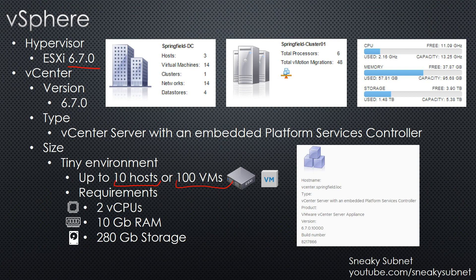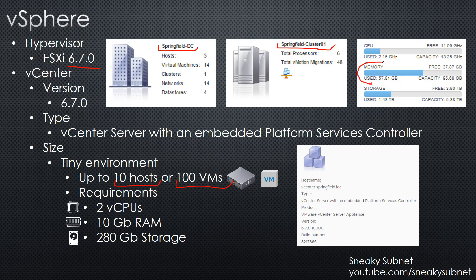It requires two vCPUs, 10 gigs of RAM, and 280 gigs of storage. On the slide you can see different screenshots from vCenter — my data center, my cluster. Also, in the previous video I forgot to mention the total capacity of RAM in the cluster, but it's easy: I have almost 96 gigs of RAM.